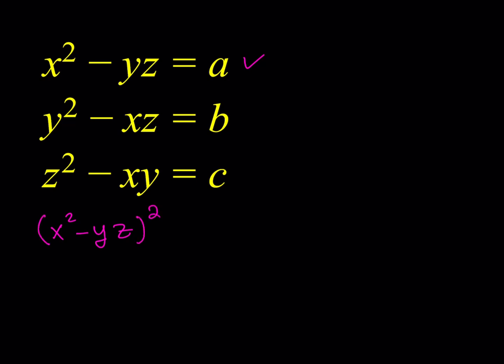From the square of the first equation, you'll notice that the terms are quadratic on the left-hand side — YZ is quadratic, X squared is quadratic. So, I'd like to square the first equation. And then from this, I'm going to subtract the second equation times the third equation.